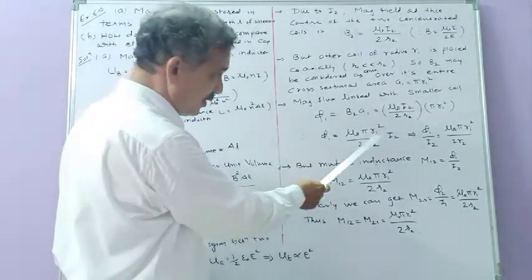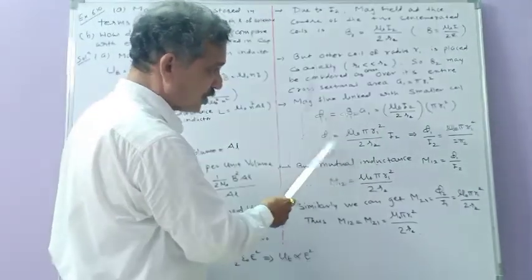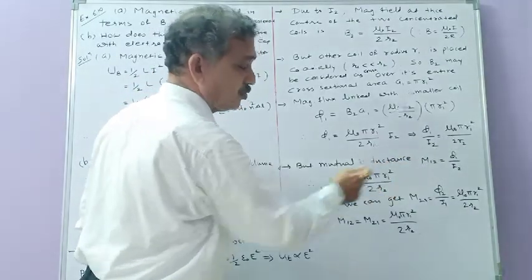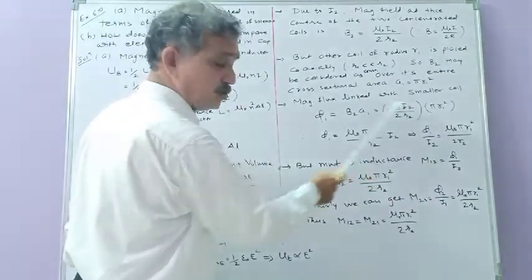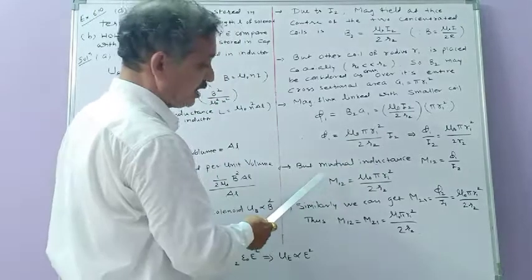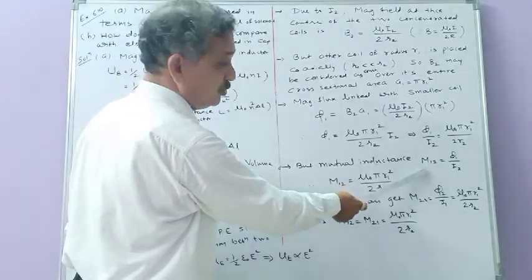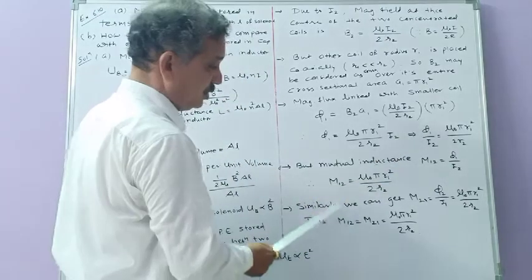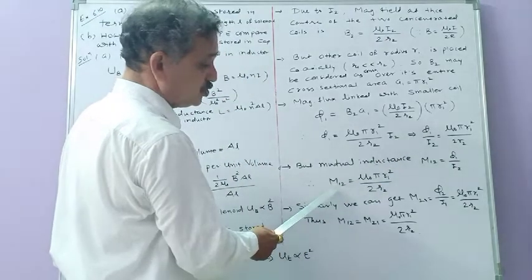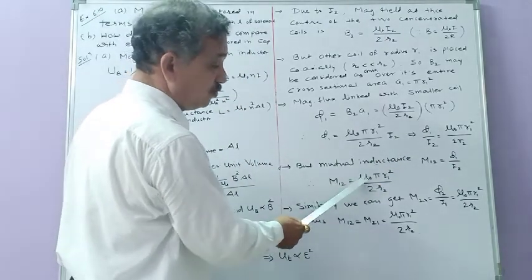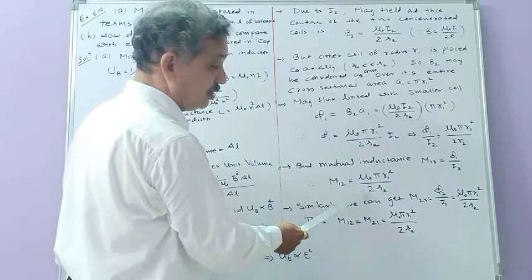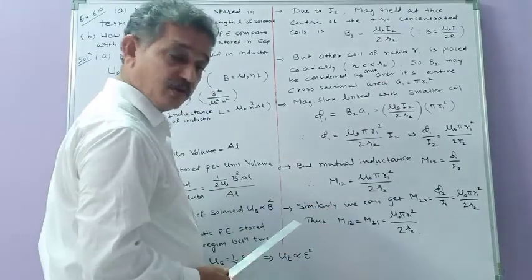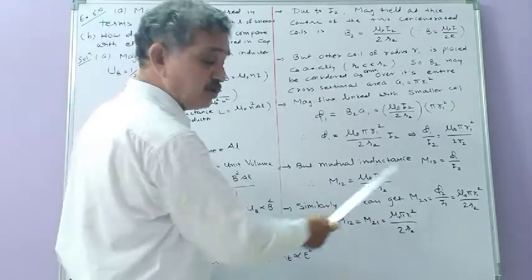So phi1 divided by I2 equals mu0 pi R1 squared upon 2R2. Therefore M12 equals phi1 upon I2, which gives mutual inductance M12 = mu0 pi R1 squared upon 2R2. Similarly, we can get M21.